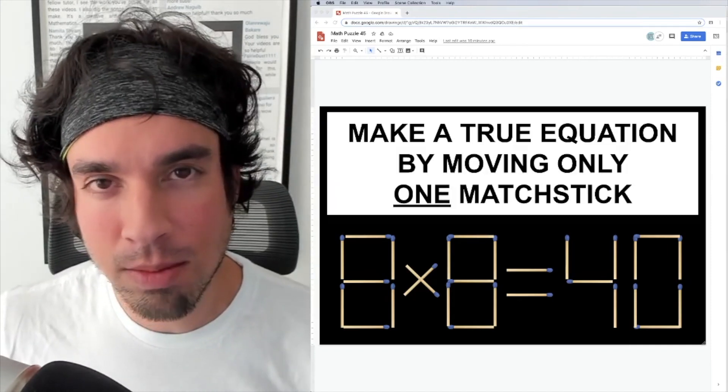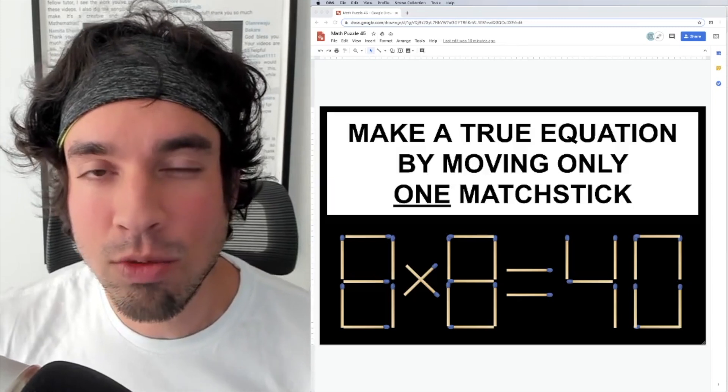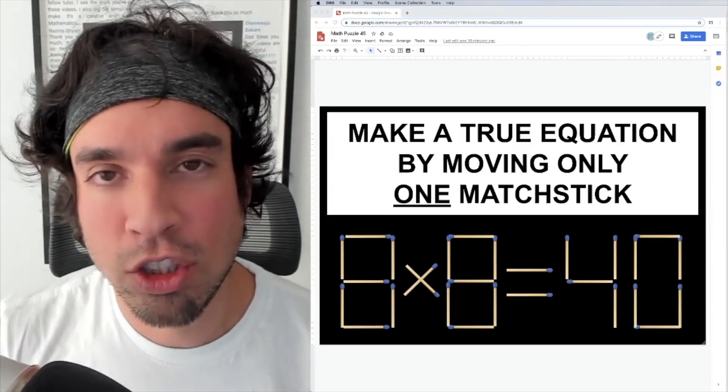So again, we start off with eight times eight equals 40, which of course is not a true equation and you must make it a true equation with just one move.